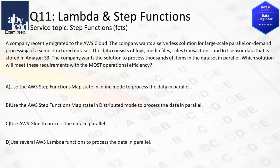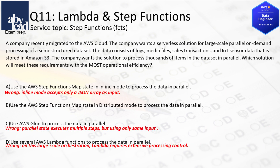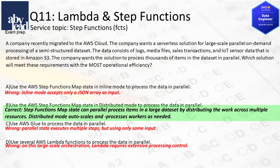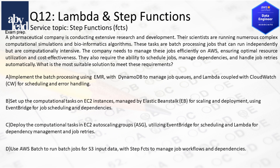Question 11: How do you on-demand process semi-structured datasets in parallel to S3 with a serverless solution? Wrong is to use inline mode with JSON as the only input, and parallel state executes only the same inputs. Moreover, Lambda isn't adequate for this large-scale orchestration. Better is to process large datasets in parallel with Step Functions map state for auto-scaled distribution.